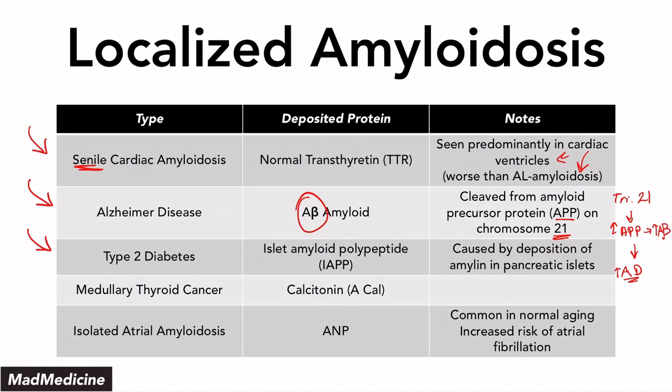In type 2 diabetes, you have islet amyloid polypeptide — IAPP — caused by deposition of amyloid in the pancreatic islets. In type 2 diabetes you are burning out your pancreas, and essentially you end up depositing amyloid in the pancreas, which further drives destruction of the pancreas. These are the three main types of localized amyloidosis you need to know.